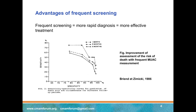This is a major advantage of MUAC: you can improve its ability to assess the risk of dying by repeated measurement. You can measure MUAC every month, which is something that in practice is impossible to do with weight-for-height.